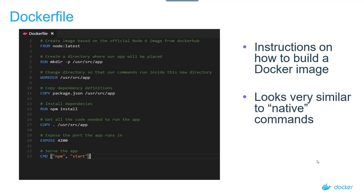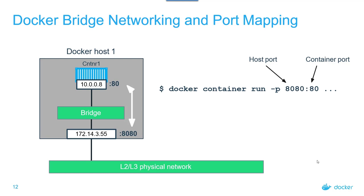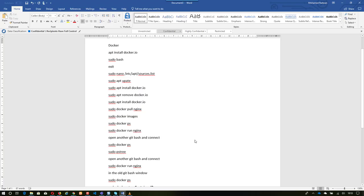Let's look at the Dockerfile. As you can see, the instructions for how we build a Docker image look very similar to native commands, so it won't be difficult. If you understand the interactive mode, you can easily write Dockerfile commands. Each Dockerfile command creates a new layer. Docker bridge network is important to understand — how we expose ports and make a bridge network with port mapping. By default, when a port is exposed, it is exposed within the hosting machine. For example, if I open port 80 on a container, this port will not be exposed to the public unless I make a bridge.